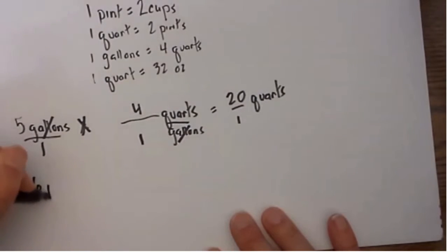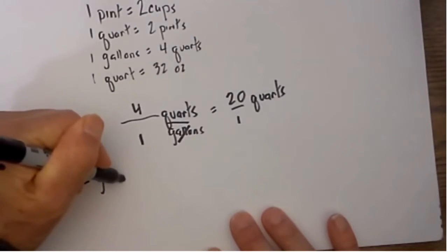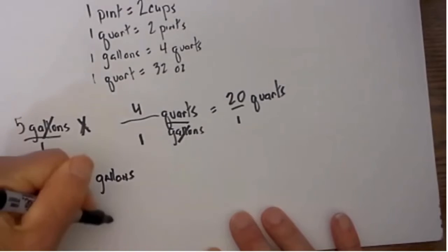Say I have 16 pints and I would like to know how many gallons that is. That is kind of a strange conversion, but this will make some sense. Okay, I have 16 pints and I would like to know how many gallons that is. So let's go ahead and begin, I will place 16 pints over 1 and do a multiplication.